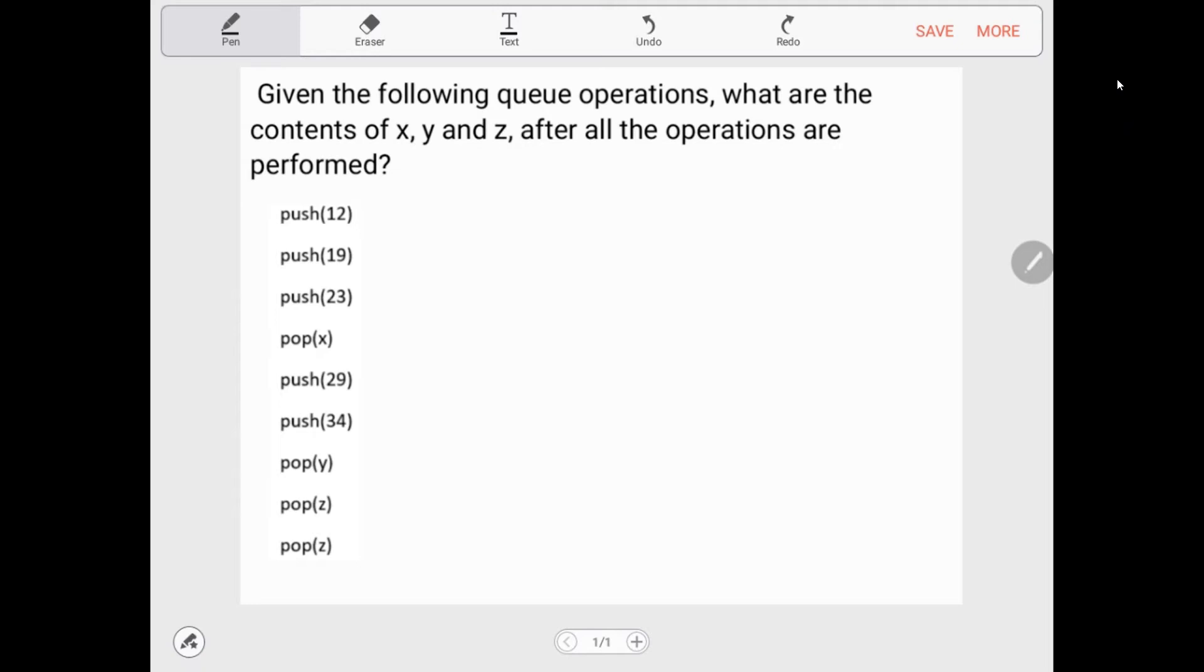The question says: given the following queue operations, what are the contents of x, y, and z after all the operations are performed? What we have to remember is queue is first in first out.